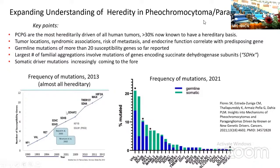If we look at the rate at which new mutations have been discovered, prior to the year 2000 we were very familiar with NF1, VHL, and RET as the main causes of hereditary pheochromocytoma. Revolutionary papers published by Bora Bisal and Hartmut Neumann respectively in 2000 and 2002 identified a whole new class of tumors characterized by succinate dehydrogenase gene mutations, and additional hereditary mutations continued to be discovered from that time to the present.